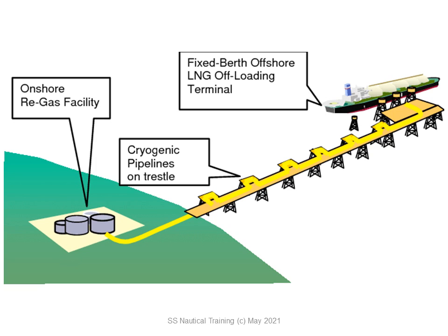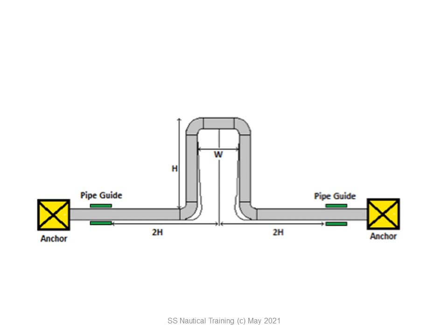Expansion loops are placed in pipelines to enable the pipelines to contend with thermal expansion and contraction and other forces that can affect the pipeline. They are typically placed in gas pipelines, irrespective of whether the gas is hot or cold, natural gas or steam.